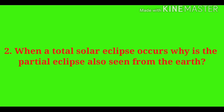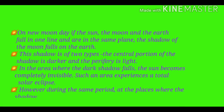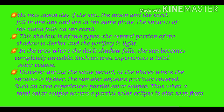Second question: When total solar eclipse occurs, why is partial eclipse also seen from the earth? On a new moon day, if the sun, the moon and the earth fall in one line and are in the same plane, the shadow of the moon falls on the earth. This shadow is of two types. The central portion is darker and the periphery is light. In the area where the dark shadow falls, the sun becomes completely invisible — this is a total solar eclipse. However, during the same period at places where the shadow is lighter, the sun disk appears partially covered — such an area experiences partial solar eclipse. Thus, when a total solar eclipse occurs, a partial eclipse is also seen from the earth.